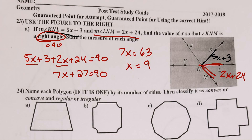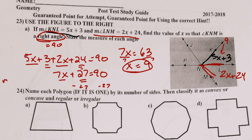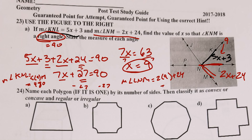Make sure you combine the like terms first: 5x and 2x to get 7x, and 3 and 24 to get 27. Then subtract 27 on both sides, divide by 7 to get x = 9. That's the variable — to find the actual angles, plug in 9 for x. Angle KNL = 5(9) + 3 = 48 degrees. Angle LNM = 2(9) + 24 = 42 degrees.